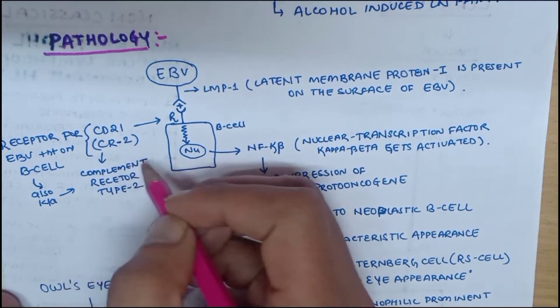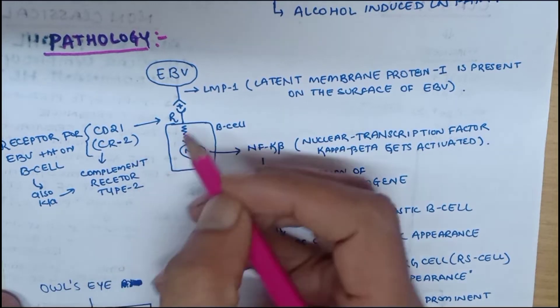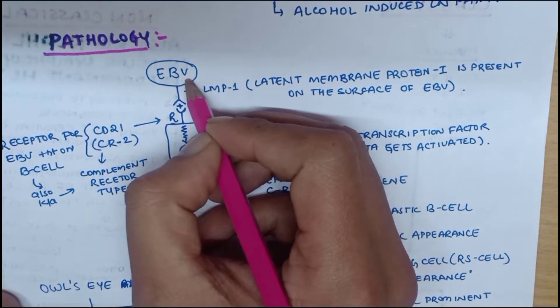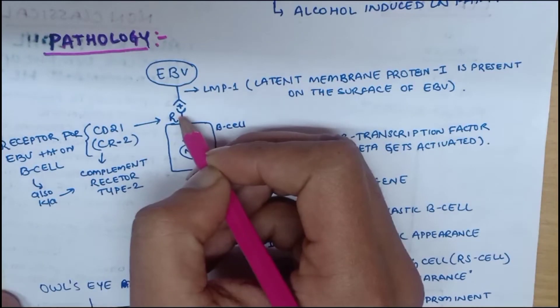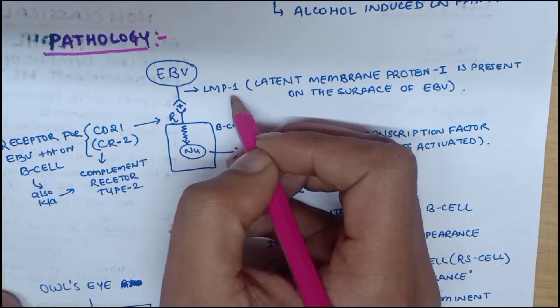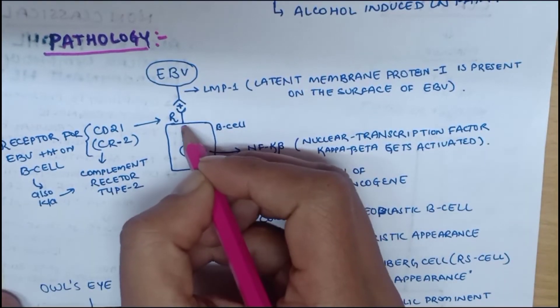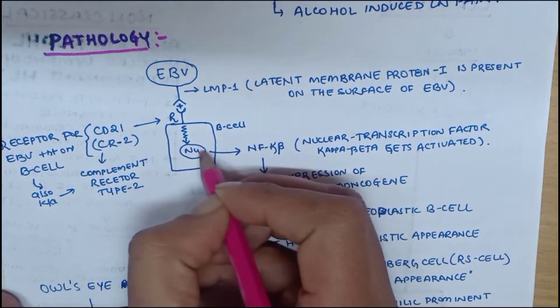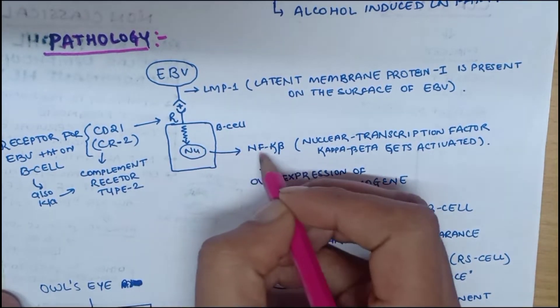When Epstein-Barr virus attaches to the CD21 receptor with the help of LMP1 protein, this will send a signal to the nucleus. Once the signal is sent to the nucleus, nuclear transcription factor kappa beta will get activated.